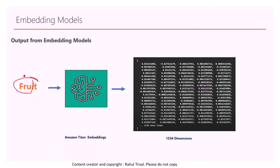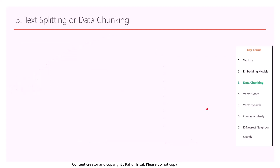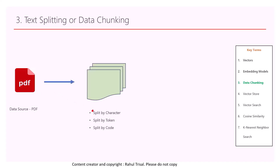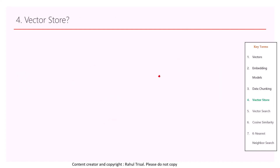Here is an example output from the embedding model. If you convert the word 'fruit' into a vector using the Amazon Titan embedding model, you get about 1536 numerical dimensions. The next concept is text splitting or data chunking. If you have a PDF document that is several pages long and you want to convert it into a vector, you first split the data into fixed numbers of characters, tokens, or code chunks. For example, you might split into chunks of around 200 characters, then pass each chunk through the Amazon Titan embedding model to convert it into a vector.